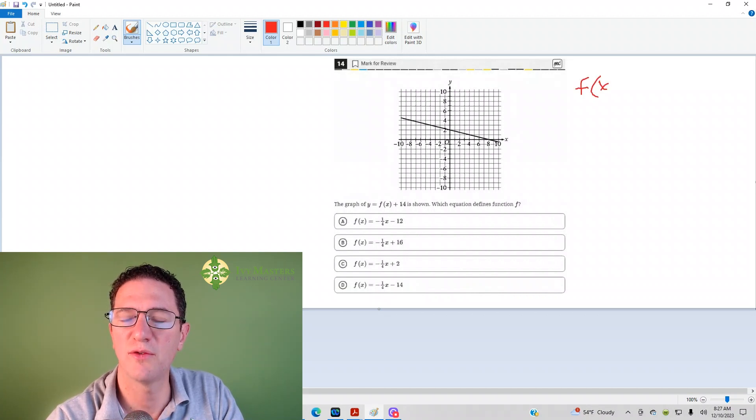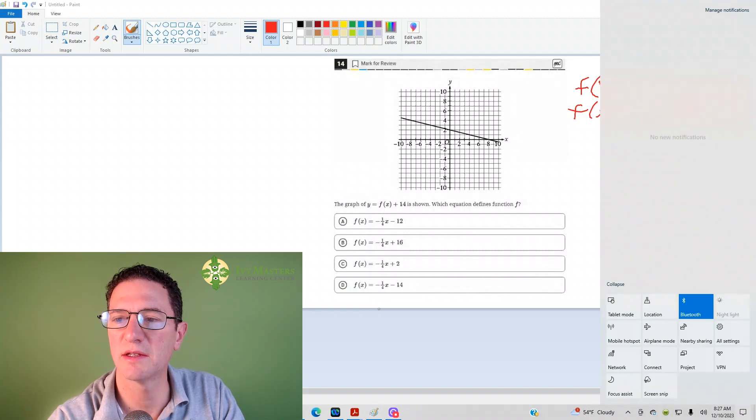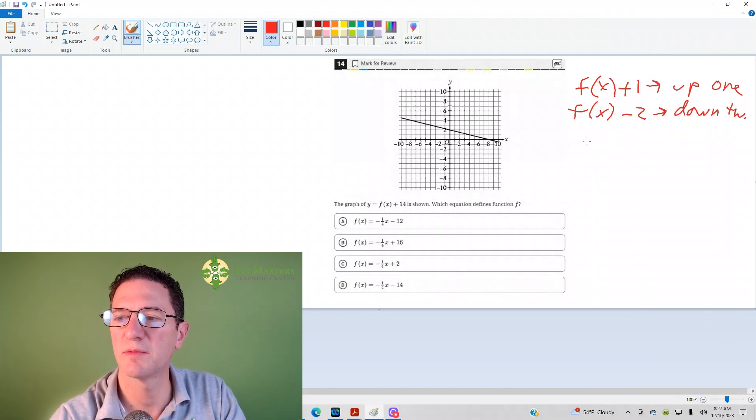If you've got f of x plus 1, then that's going to move the graph up 1. If you've got f of x minus 2, that's going to move the graph down 2. And that makes sense. We would expect that.